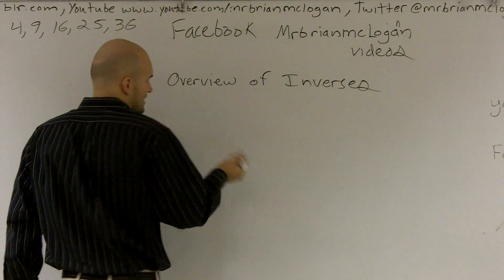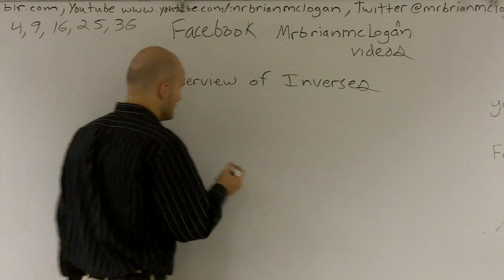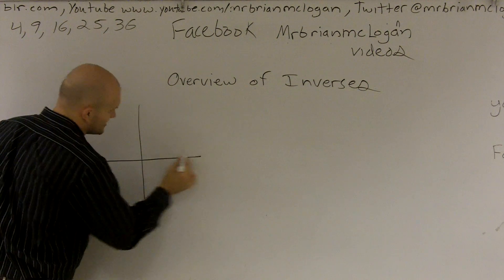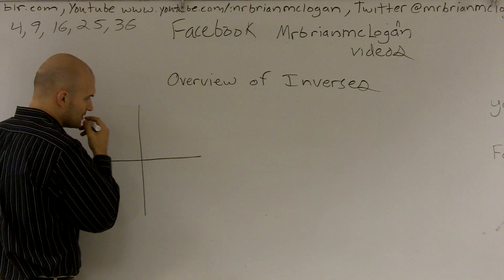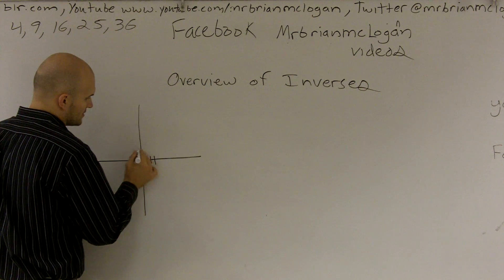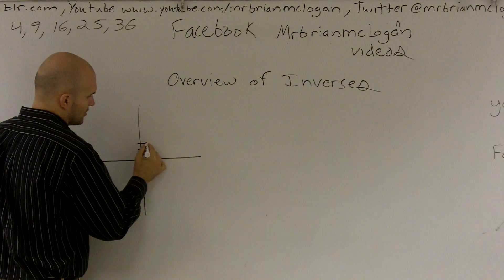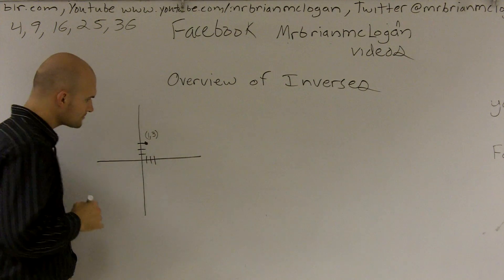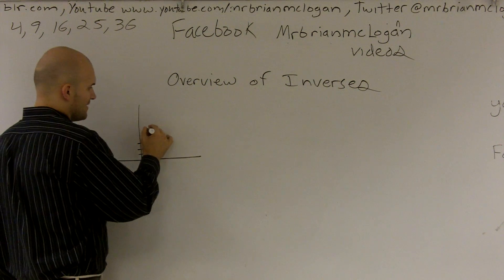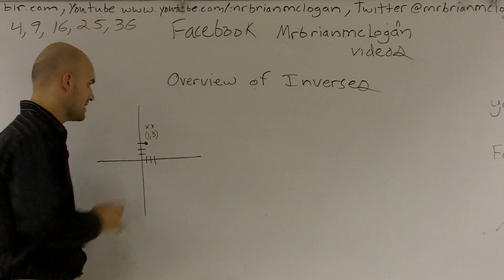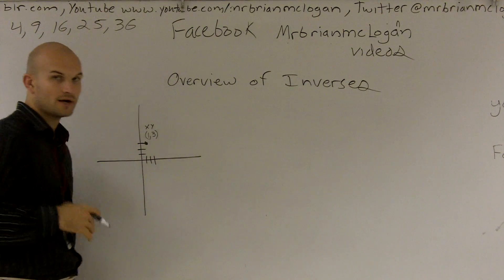Let's start off with an ordered pair. Let's say I'm given the ordered pair 1 comma 3. We know that we have an x and a y-coordinate, and we know that x is going to be a part of our domain and y is going to be a part of our range.